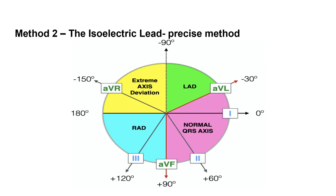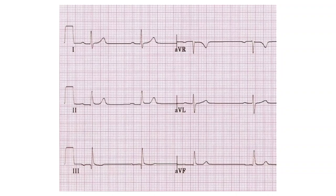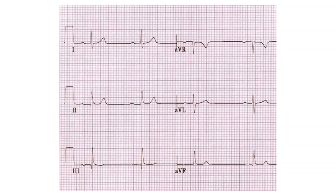Coming to the second method, which is somewhat more precise, known as the isoelectric lead method. For all practical purposes the quadrant method will solve most problems, but sometimes you need to find out the exact or near-exact value of the axis. In this isoelectric lead method, the first step is to find out which lead is the isoelectric lead among the six limb and augmented leads — whichever lead has a straight line or has R equal to S.